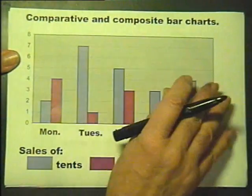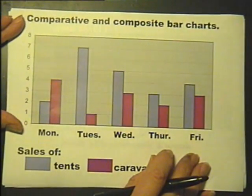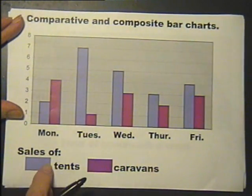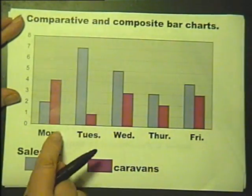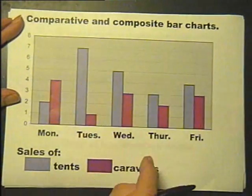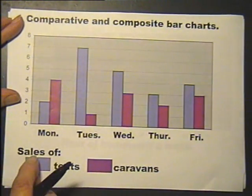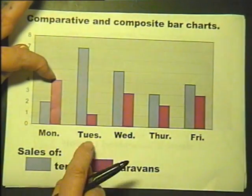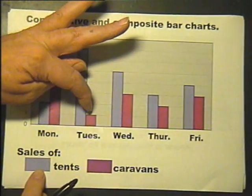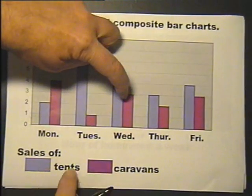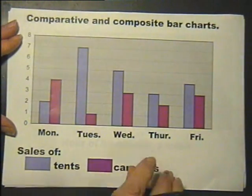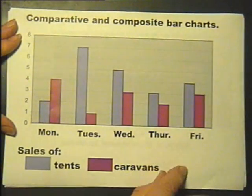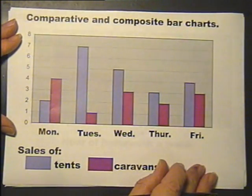Now we come to comparative bar charts. This is a comparative bar chart. We've got a nice colour code here — this colour is tents and this colour is caravans. On Monday 2 tents were sold and 4 caravans were sold. On Tuesday 7 tents and 1 caravan. On Wednesday 5 tents and 3 caravans, and so on. So this is a comparative chart of sales of tents and caravans during one particular Monday-to-Friday week. That's what a comparative bar chart is.